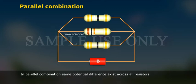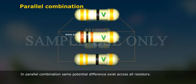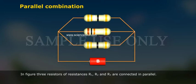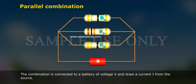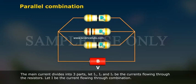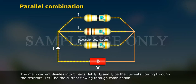In parallel combination, the same potential difference exists across all resistors. In the figure, three resistors of resistances R1, R2, and R3 are connected in parallel. The combination is connected to a battery of voltage V and draws a current I from the source. The main current divides into three parts. Let I1, I2, and I3 be the currents flowing through the resistors, and I be the current flowing through the combination.